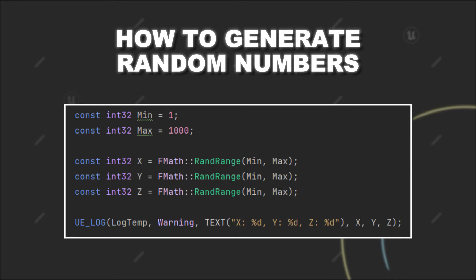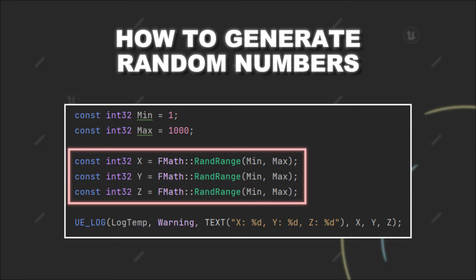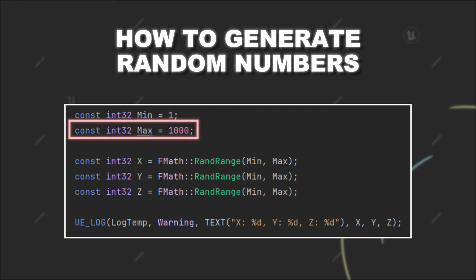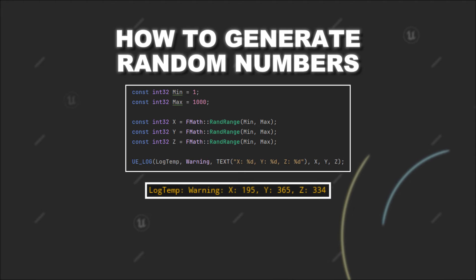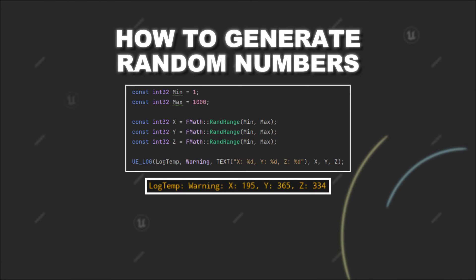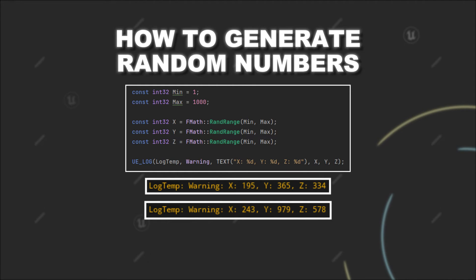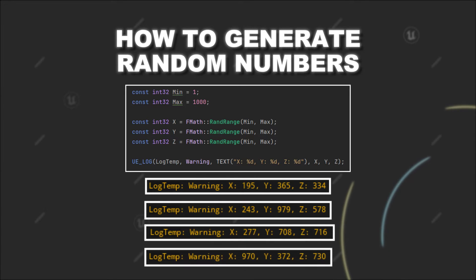Now let's say we generate a sequence of three random numbers between 1 and 1000. We can see that it works as expected and we indeed get a sequence of three numbers which are between 1 and 1000. However, if we now restart the game and compare the second execution to the first one, we can see that the generated sequence is different, and if we repeat the process, you see that this behavior persists.